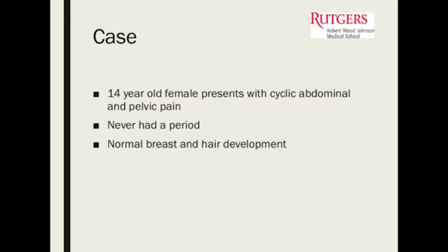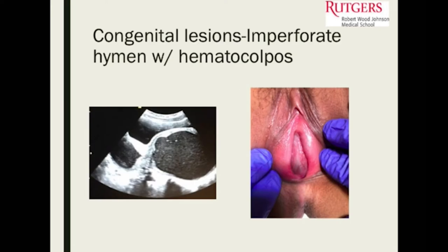We had a 14-year-old who came in with cyclic abdominal and pelvic pain who never had a period. She showed otherwise normal pubertal development. She had been presenting multiple times to the nurse's office — they actually thought she was being abused at home. She ended up in the emergency room with severe pain, and an ultrasound showed her uterus was filled with blood and her whole vagina was filled with blood because she had an imperforate hymen.